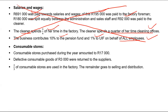Consumable stores purchased during the year amounted to $17,000. Defective consumable goods worth $3,000 were returned to the supplier. So: opening balance of $4,500, plus purchases of $17,000, minus returns of $3,000, minus closing balance of $6,500 gives the consumable stores actually used. Two-thirds of consumable stores are used in the factory, and one-third at the selling and distribution side.